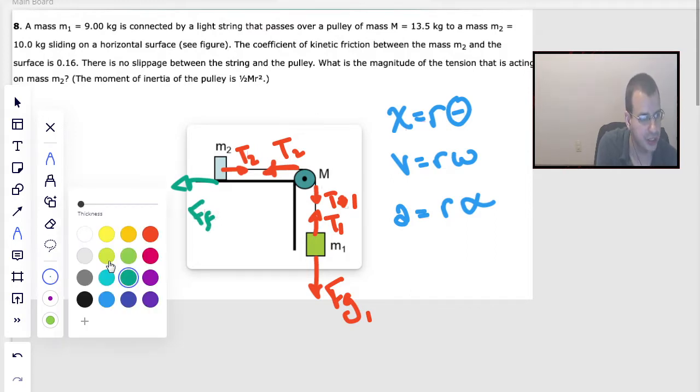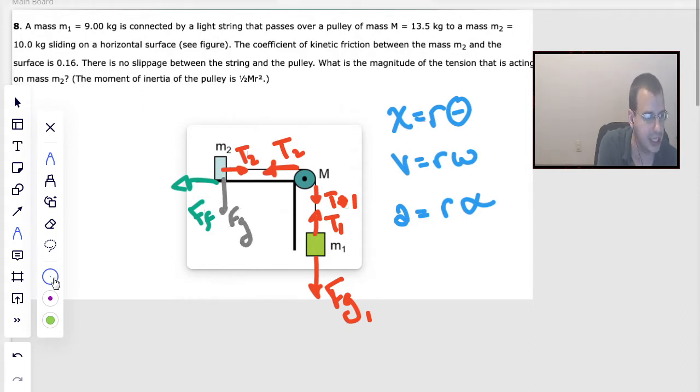Pulling the block opposing the motion is going to be force friction. We're going to have force gravity going down—I know it's kind of messy—then we're going to have force normal going up. I just draw those because that's going to be key for finding force friction.